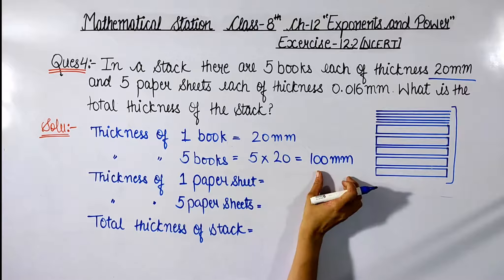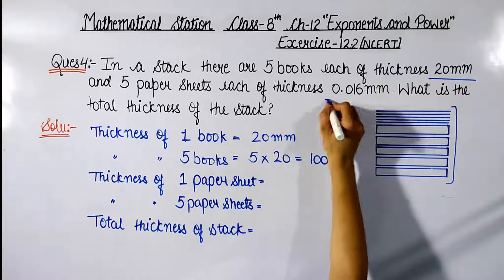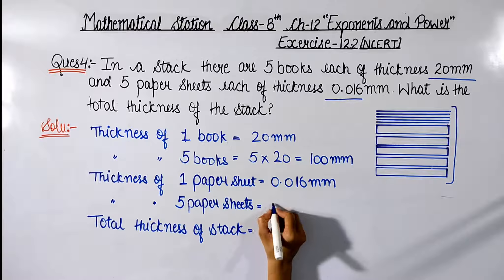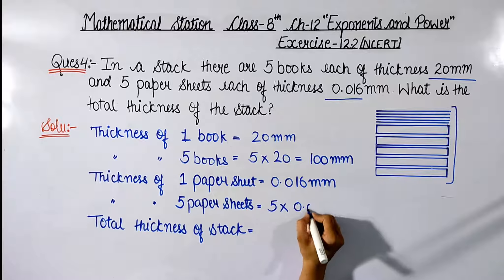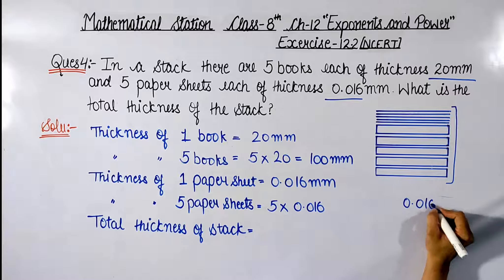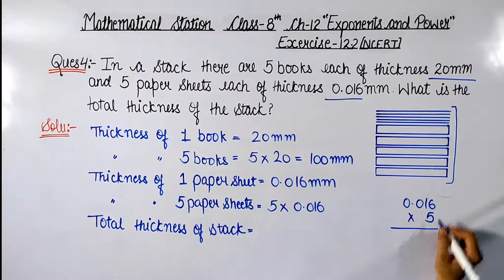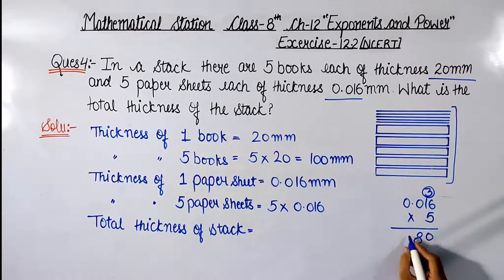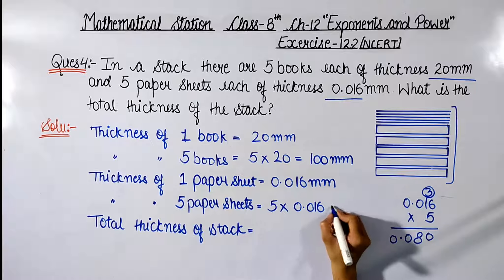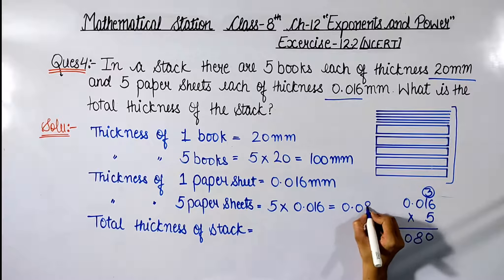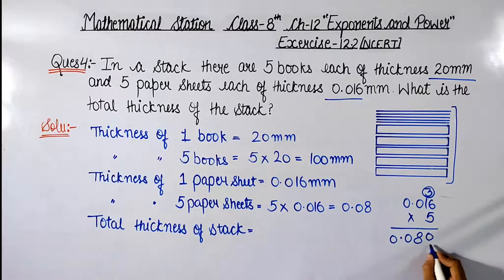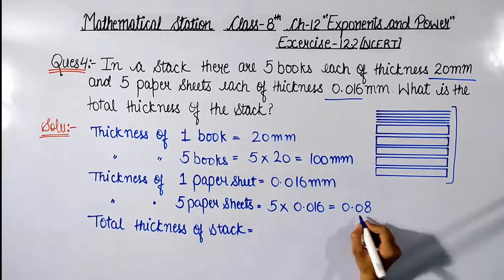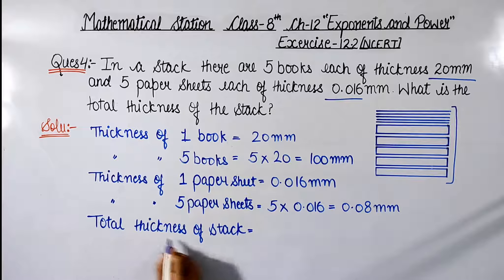5 books is 100 mm. The thickness of 1 paper sheet is 0.016 mm. The thickness of 5 paper sheets is 5 multiplied by 0.016, which equals 0.08 mm.